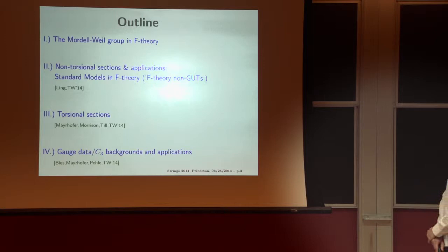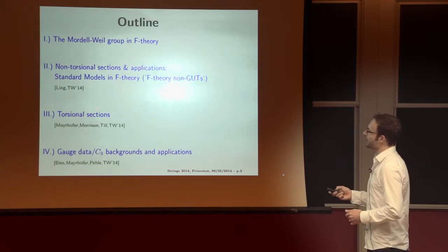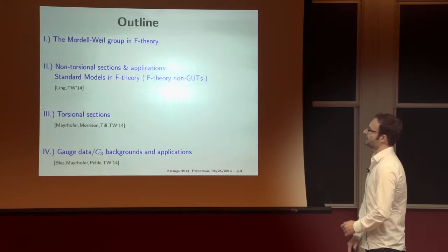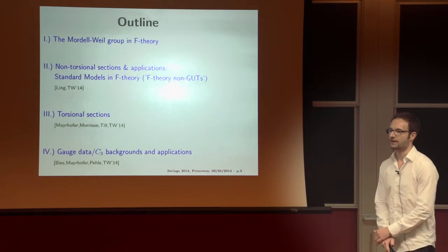So, I will start with a quick review of the Mordell-Weil group in F-theory. The Mordell-Weil group has two pieces, a torsional piece and a non-torsional piece. The non-torsional sections will have an application in the first part in our approach to standard models in F-theory, in the paper that appeared today. Then I will discuss torsional sections in a recent paper here, and finally, hopefully, have time to also say something about the gauge data, C3 backgrounds, and applications.